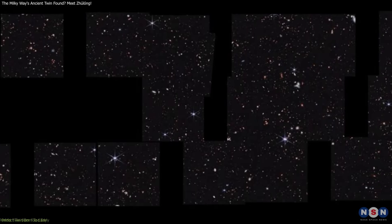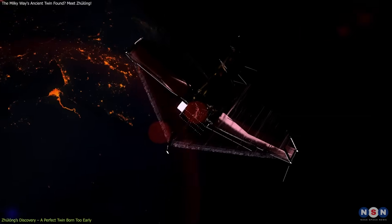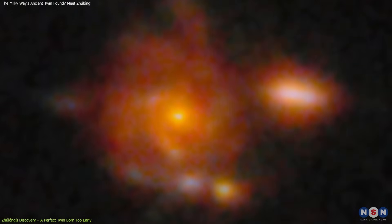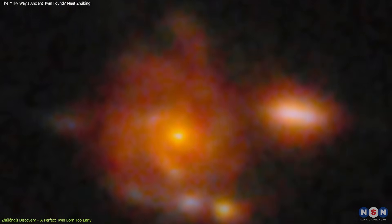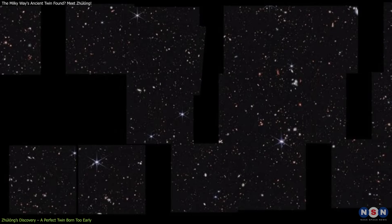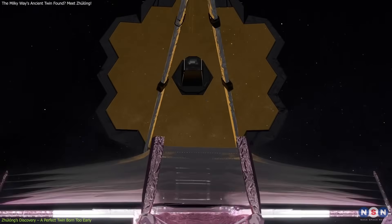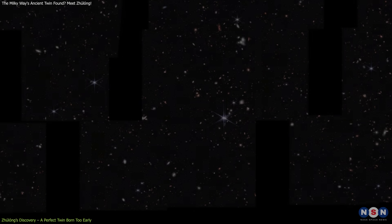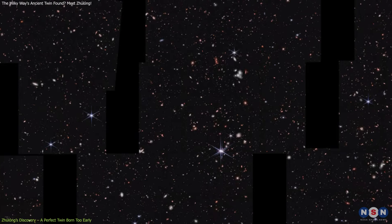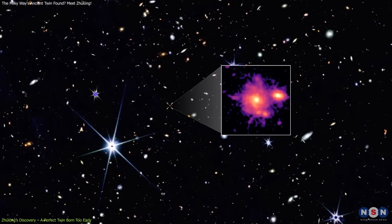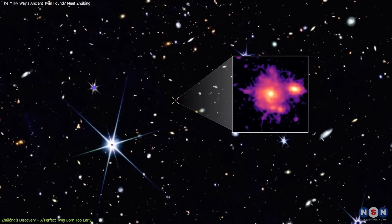During a wide-area survey known as panoramic, conducted using Webb's Pure Parallel Imaging Mode, astronomers stumbled upon Zhulong, a galaxy that changed everything. The panoramic survey is a clever method where Webb collects deep-sky images while its main instruments observe other targets, allowing researchers to gather a vast amount of high-quality data efficiently.